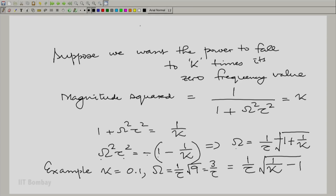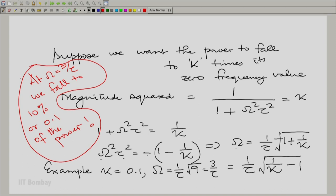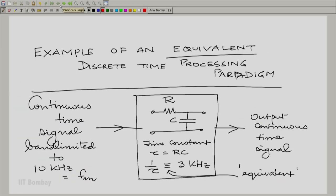So, 3 by tau has a significance. At omega equal to 3 by tau we fall to 10 percent or 0.1 of the power. And that is what I meant when I said take it equivalent. You know you remember I said take it equivalent that is what I meant. Here I said take 1 by tau equivalent to 3 kilohertz.